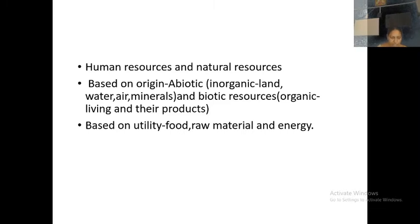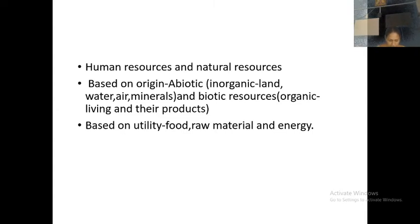First, based upon their origin. Based upon their origin, you can classify resources into abiotic and biotic resources. Abiotic resources means they are inorganic — for example, land, water, air, minerals. All these come under inorganic, so they are called abiotic resources, or known to be inorganic matter.